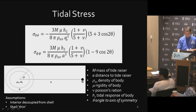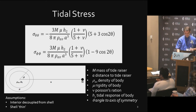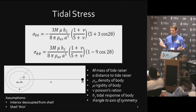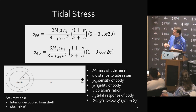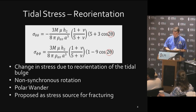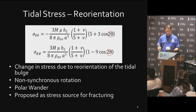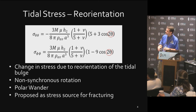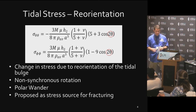The closer the primary is, the higher the tides will be and more stress can be imparted. Also, the more rigid the outer membrane being deformed is, the higher the stresses can be. The H2 love number — how tidally responsive the body is — the more responsive it is, the higher the stress. This is the form of the equations, and now I'm going to show how we use these equations to look at different stresses from different processes.